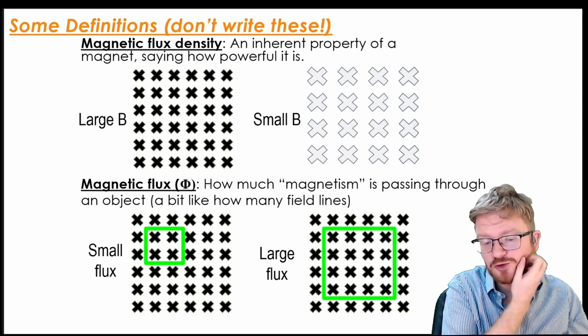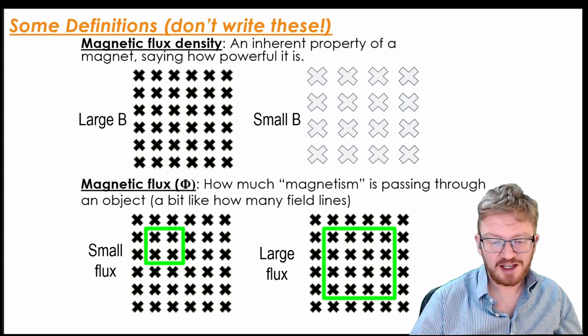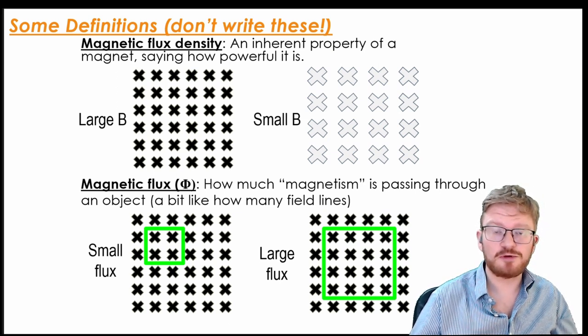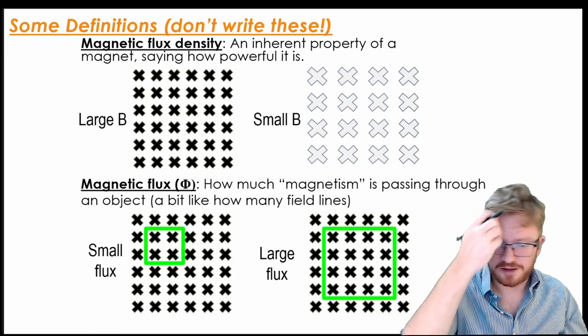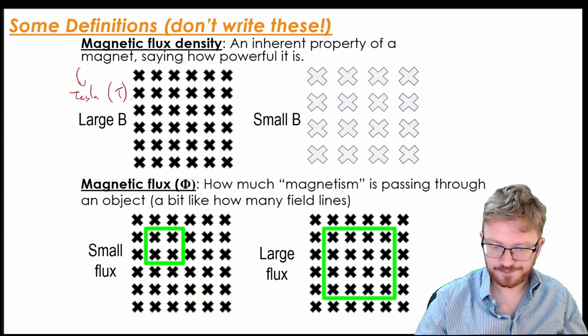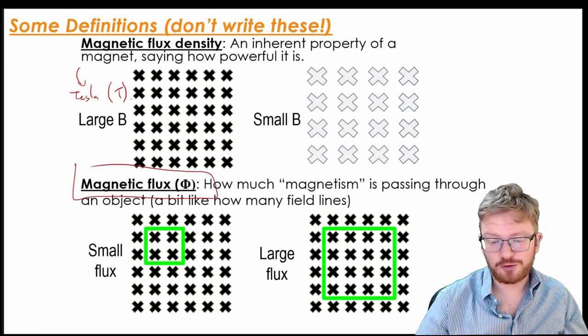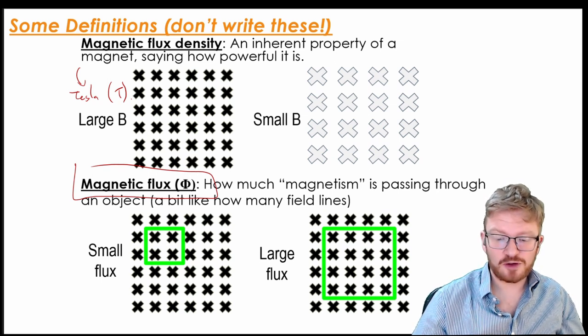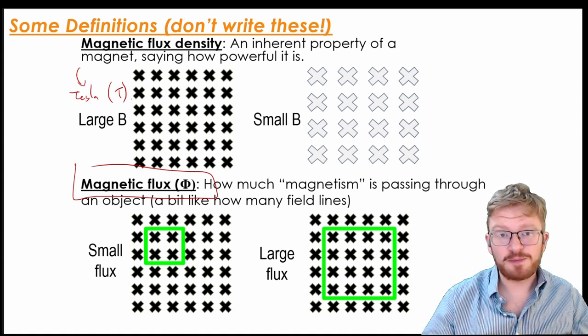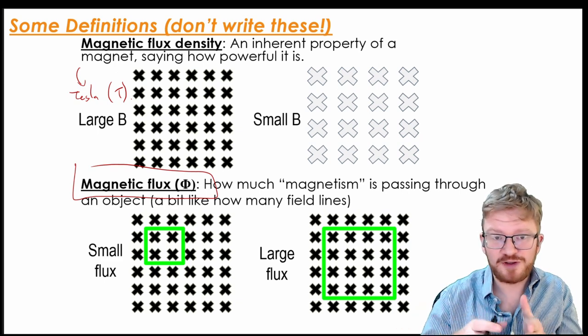A couple of quick definitions for you, just to make sure you're clear with this. The first one is the idea of magnetic flux density. So magnetic flux density, that is a property of a magnet and tells us how powerful it is. So you can think of it as the number of field lines per square metre. So this is measured in Tesla, which has a symbol capital T.